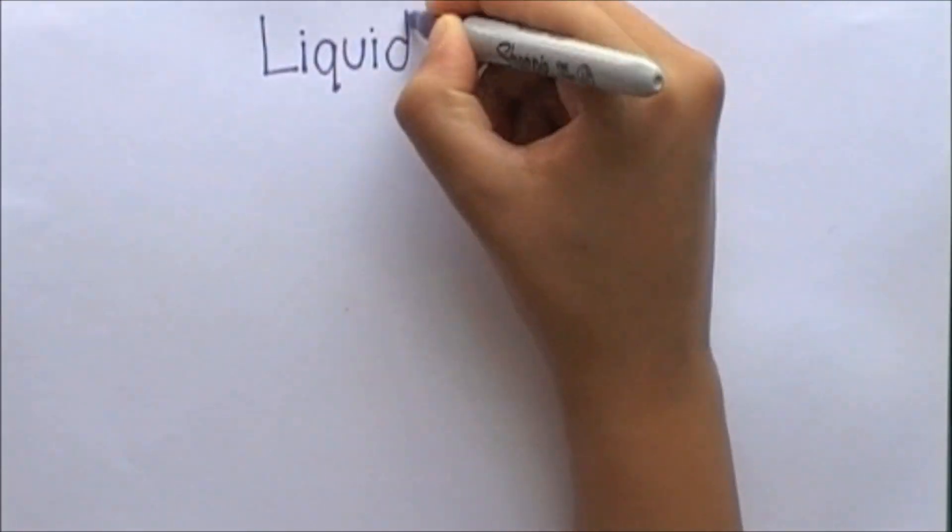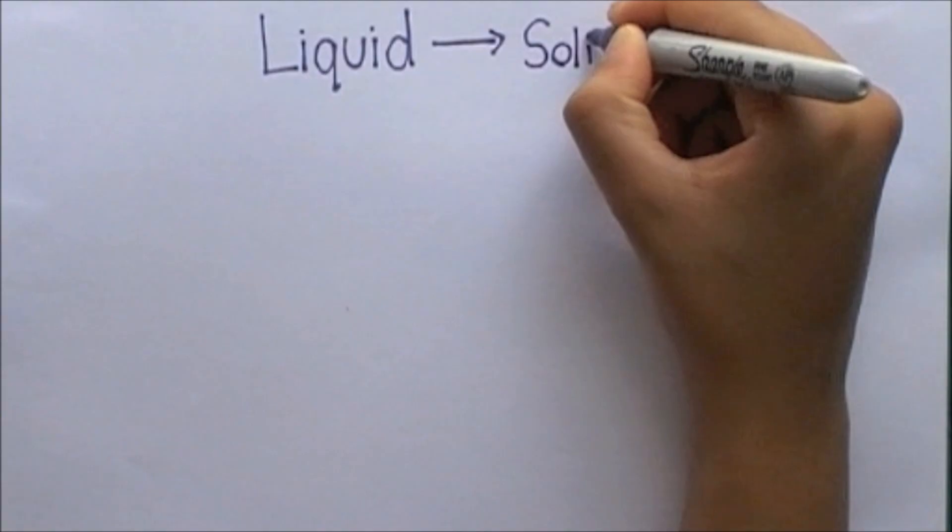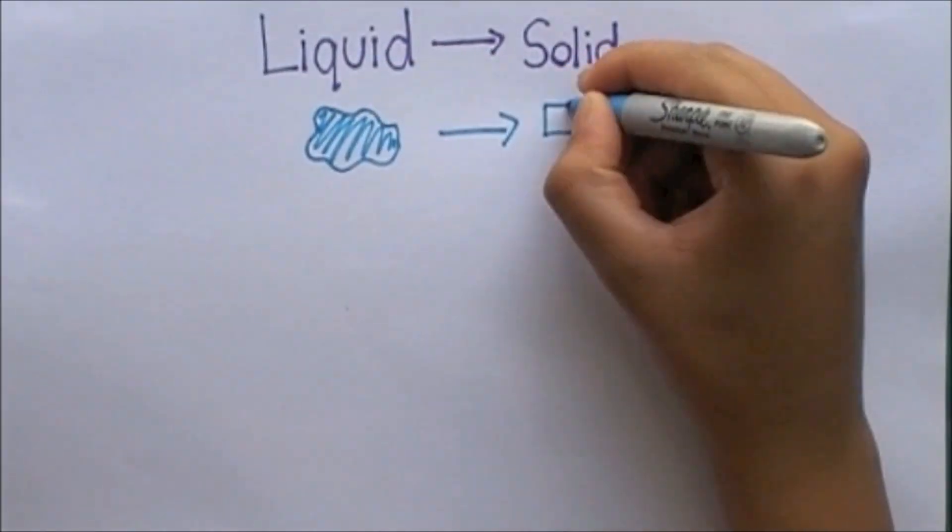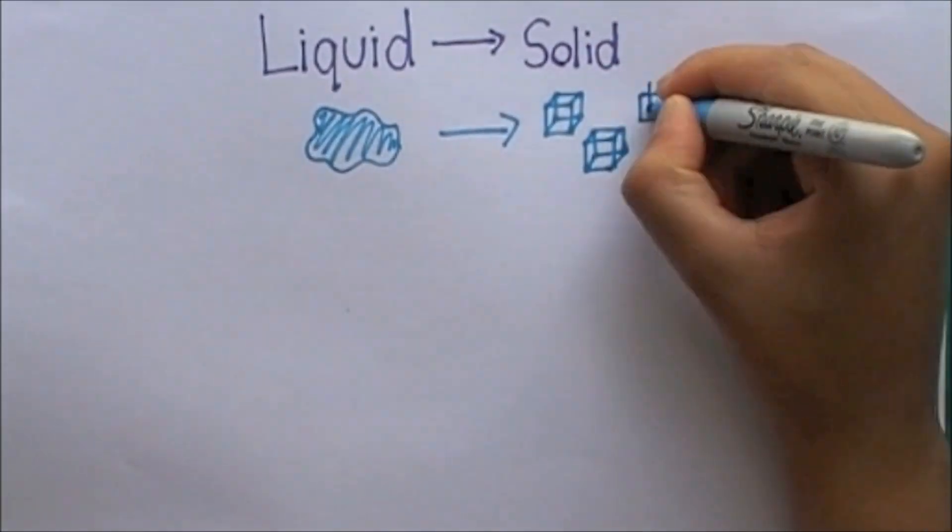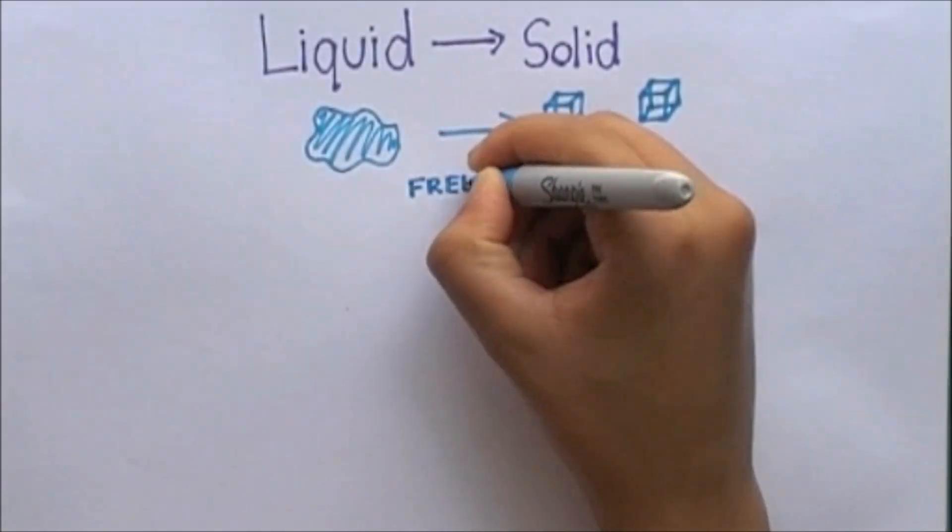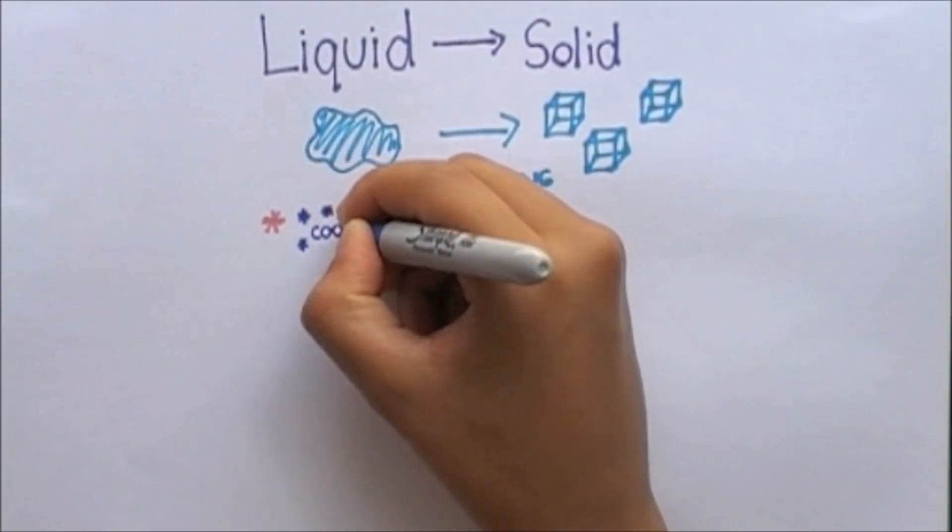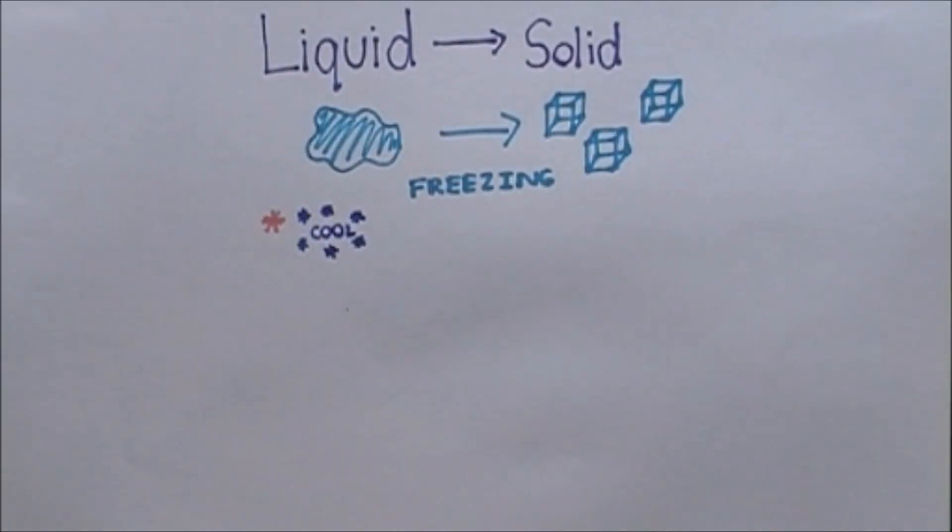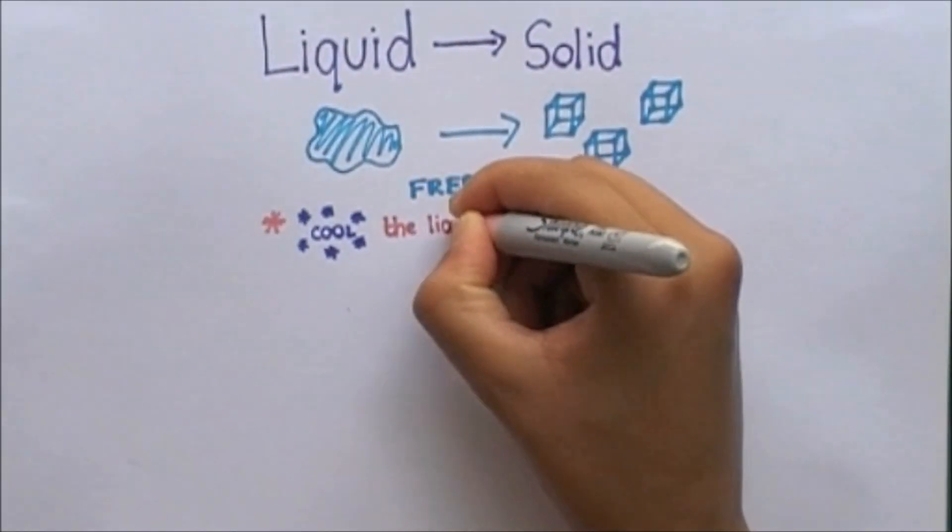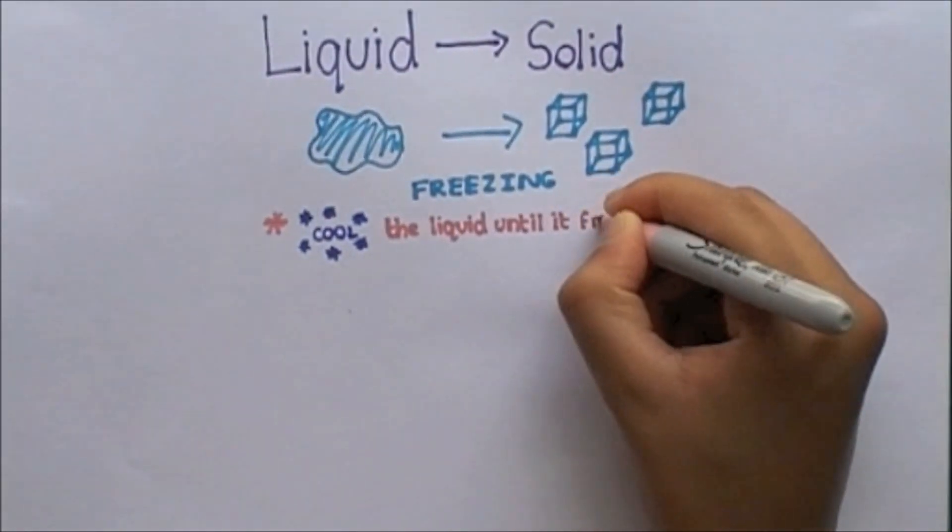The change from liquid to solid is called freezing. This change is brought about by cooling the liquid until it freezes into a solid.